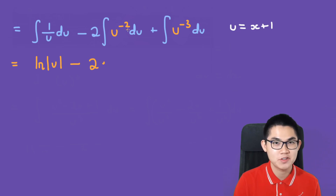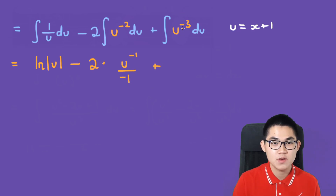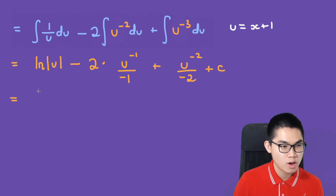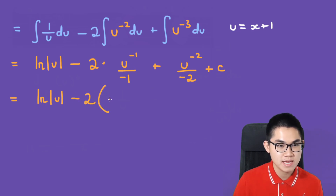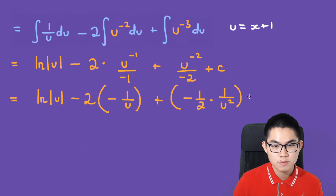Then minus 2 times the antiderivative of u to the negative 2, which is u to the negative 1 over negative 1. Plus the antiderivative of u to the negative 3, which is u to the negative 2 over negative 2, plus C. This gives us ln|u| minus 2 times (negative 1/u) plus (negative 1 over 2u²) plus C.